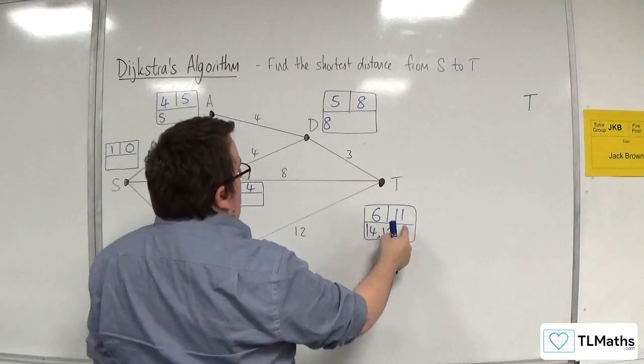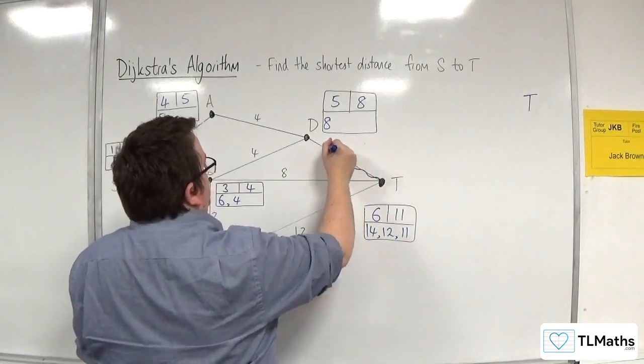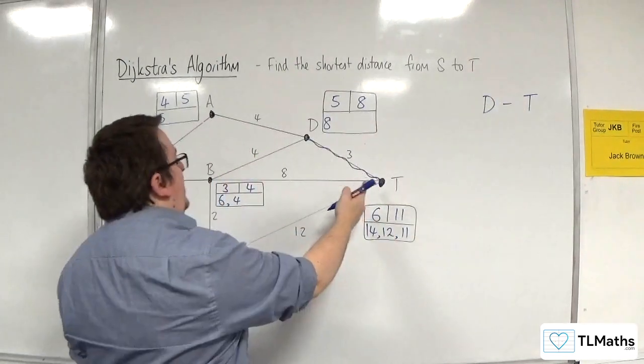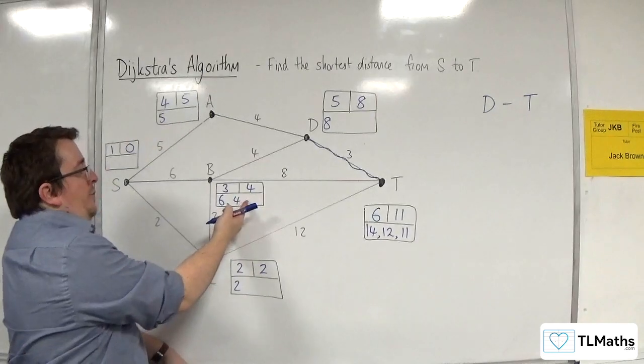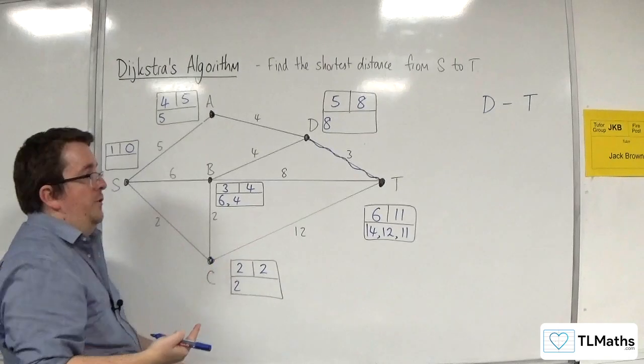So we've got 11 take away three gets us to eight, so that's all right. So to D. 11 take away eight is three, which isn't four. And 11 take away 12 is minus one, which isn't two. So they don't form part of the route.